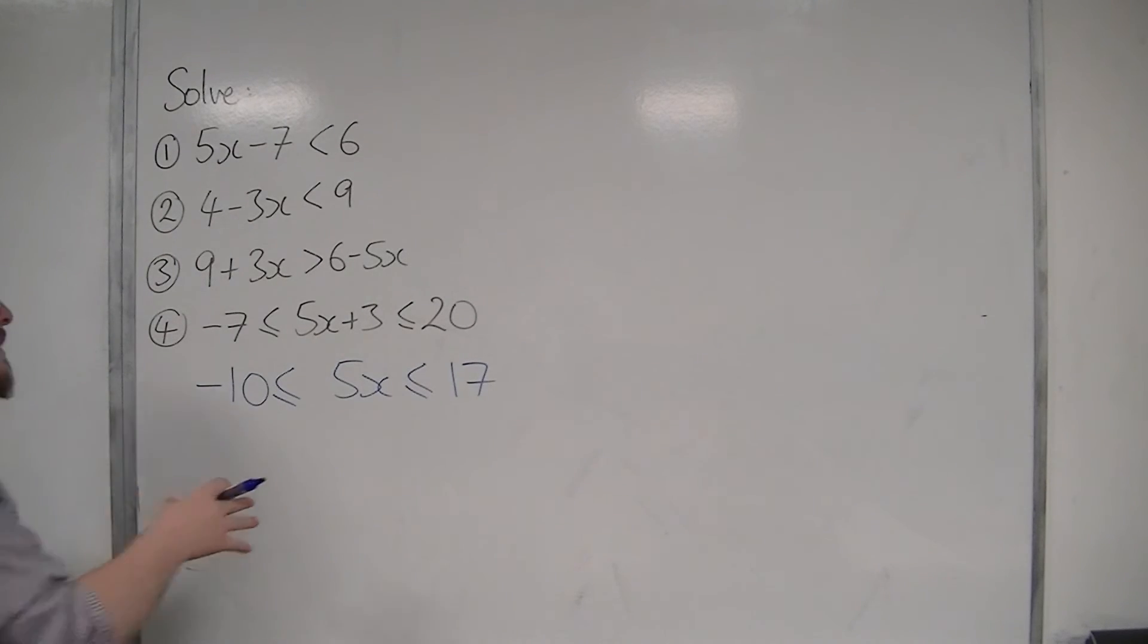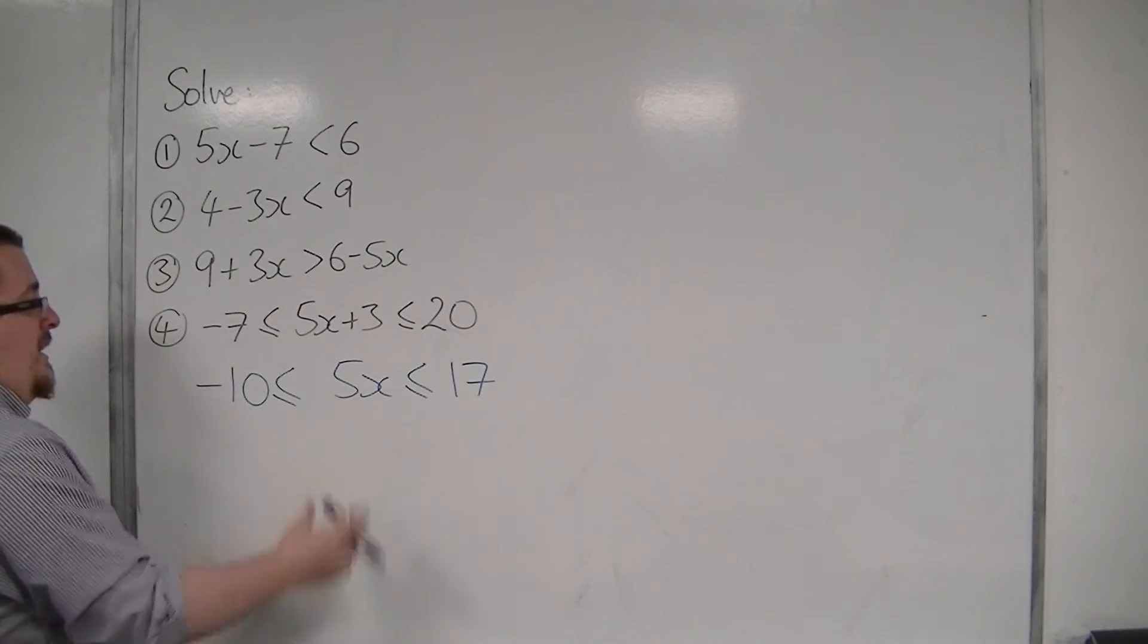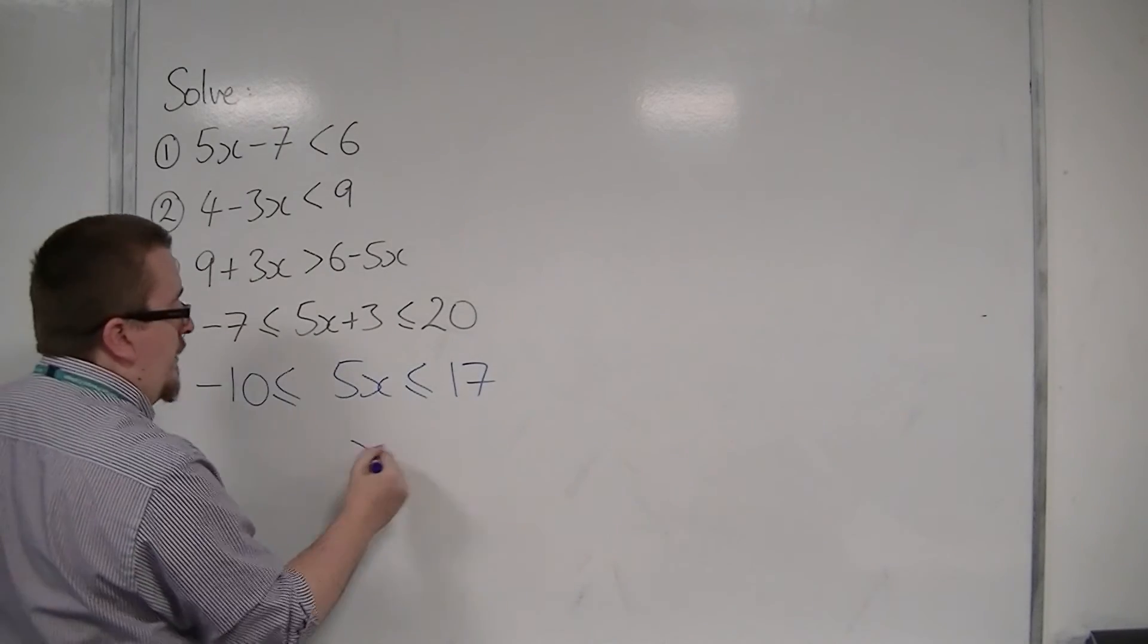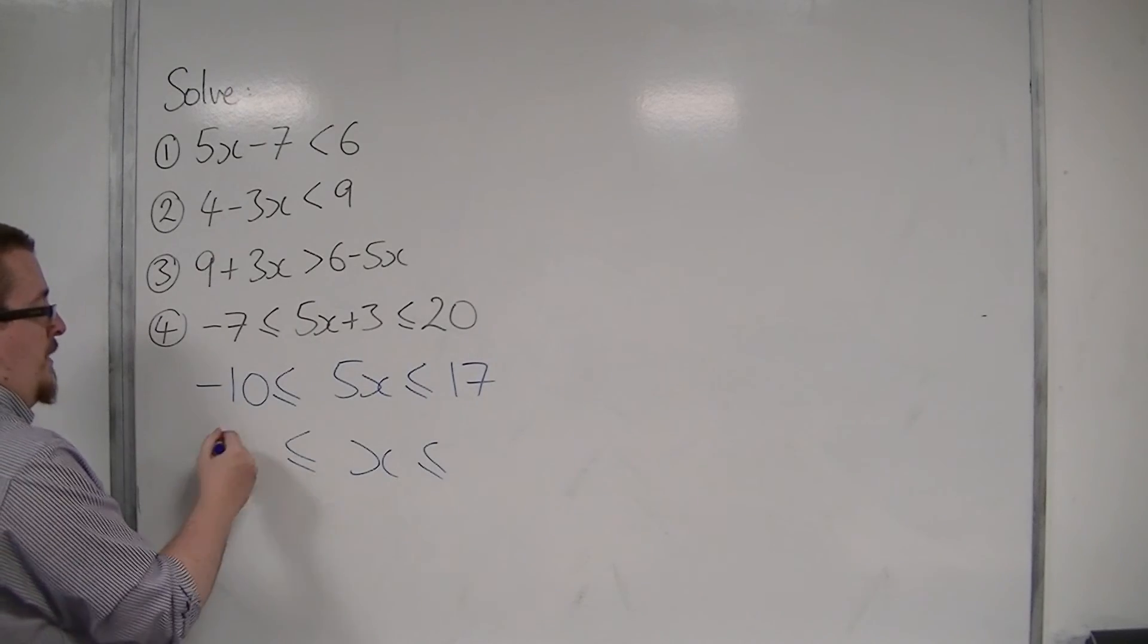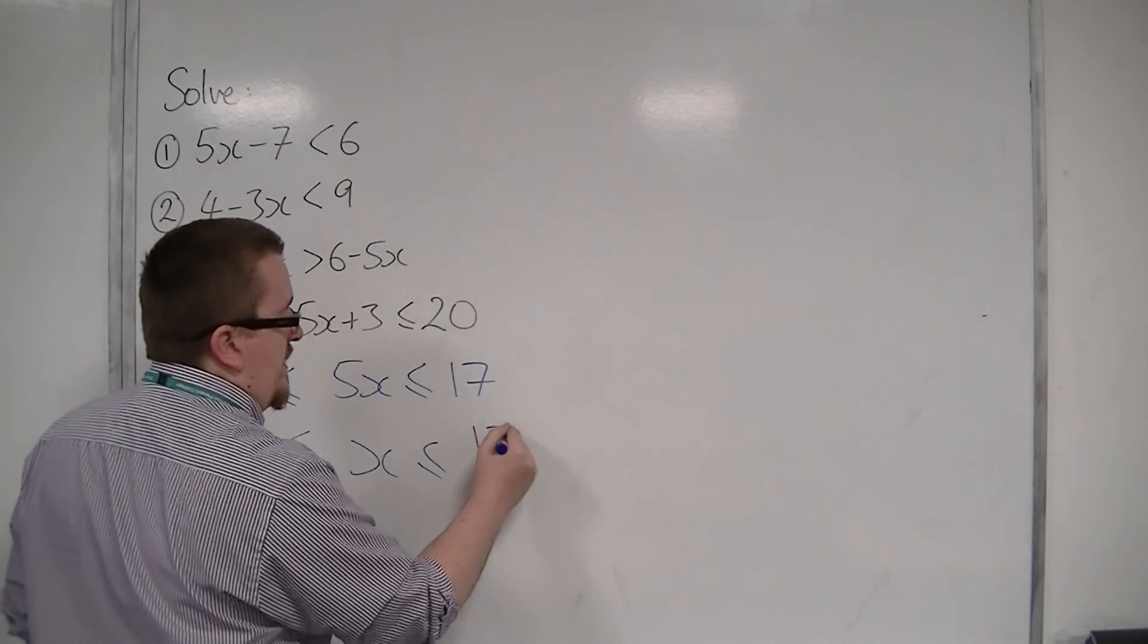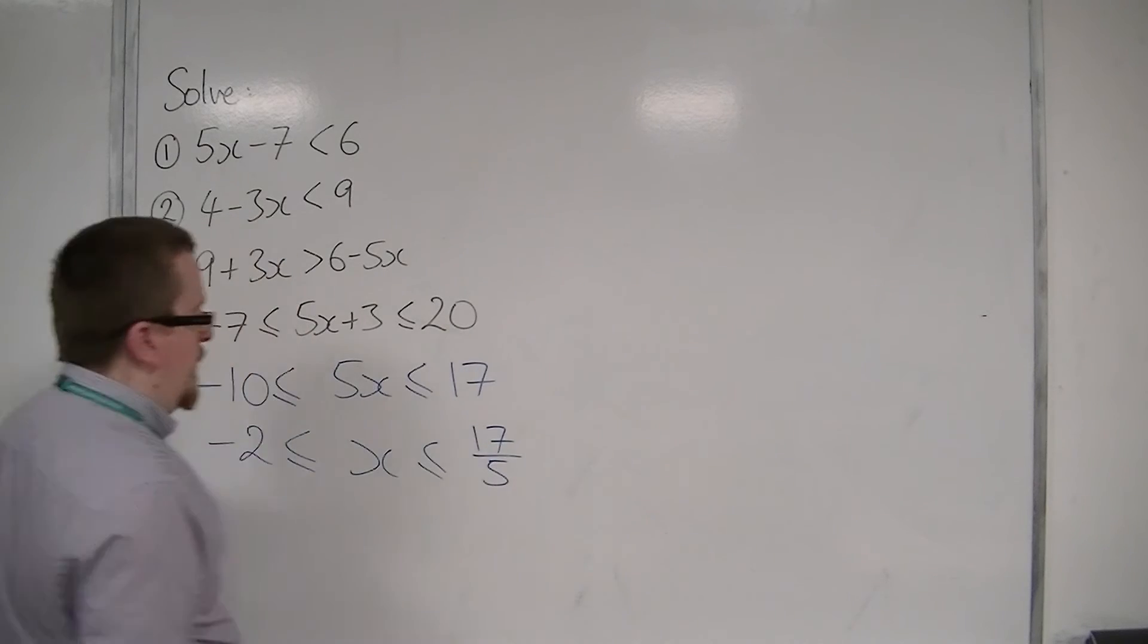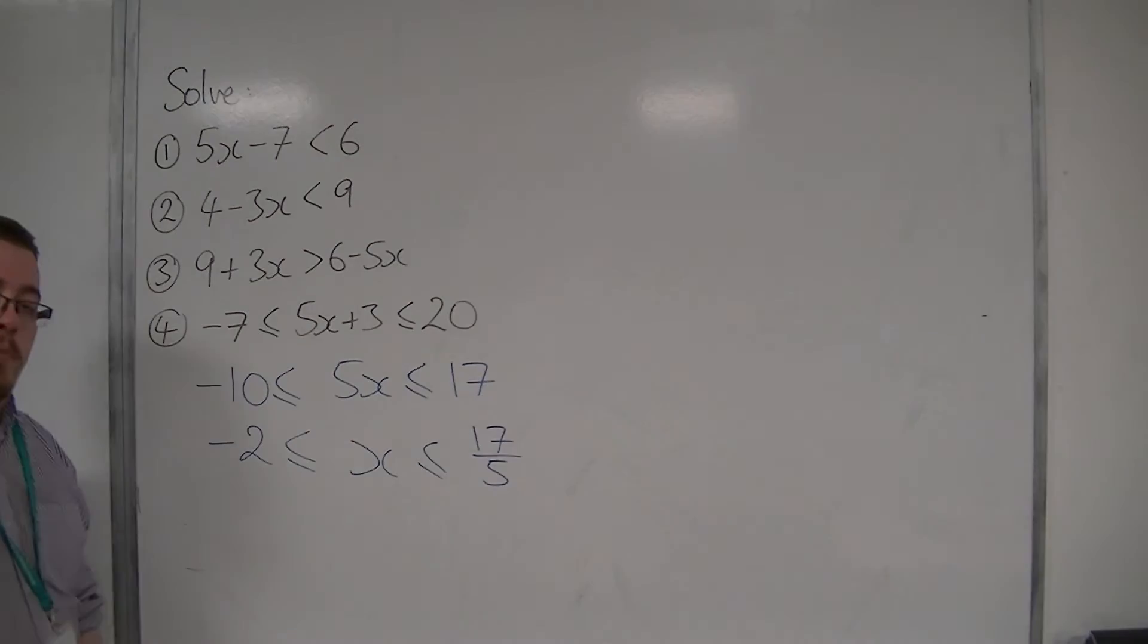Then I can divide each section by 5 to let me have x by itself. So minus 10 divided by 5 is minus 2. And 17 divided by 5 is just 17 fifths. And that is the solution to the original inequality problem.